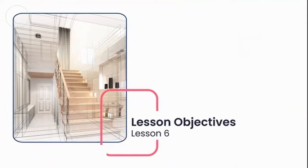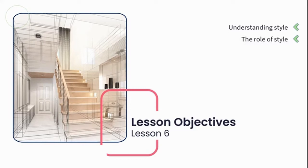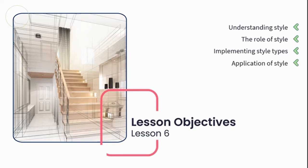Today is lesson six. We are going to jump into style and understanding everything you need to know about style and style types. Let's take a look at our key learning objectives for this lesson. We start by understanding and defining style, we look at the role style plays within interior design, we define the characteristics within each style and look at how to implement them, and we understand how to apply the style categories into your very own spaces.